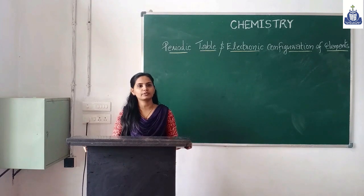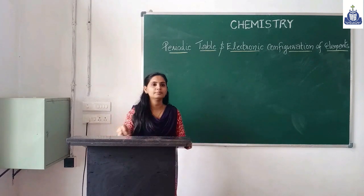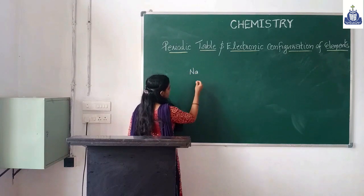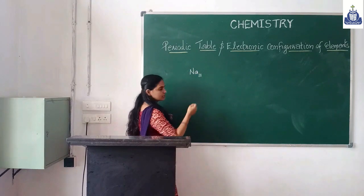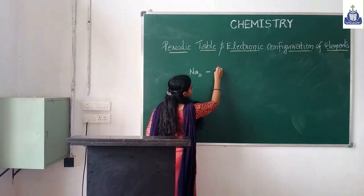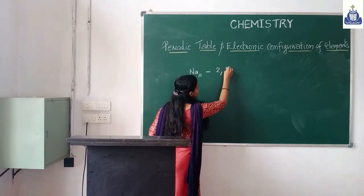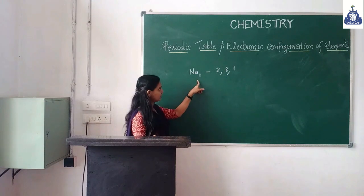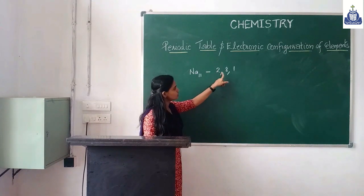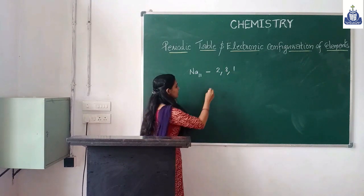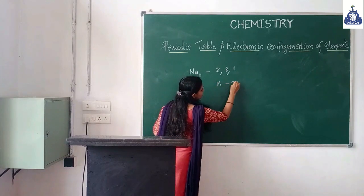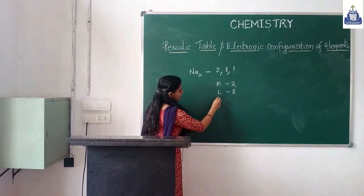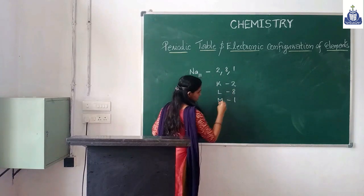Now we will learn about the Bohr model of sodium. Sodium's symbol is Na. Its atomic number is 11, so its electronic configuration is 2, 8, 1. In the K shell there are 2 electrons, in the L shell there are 8 electrons, and in the M shell there is 1 electron.